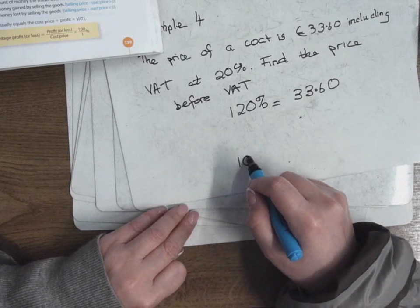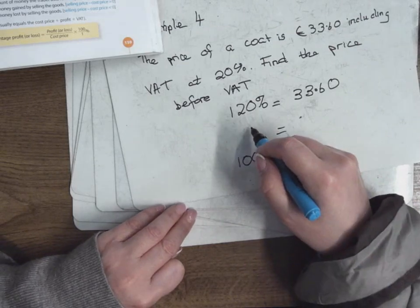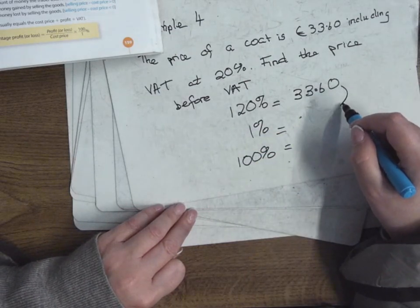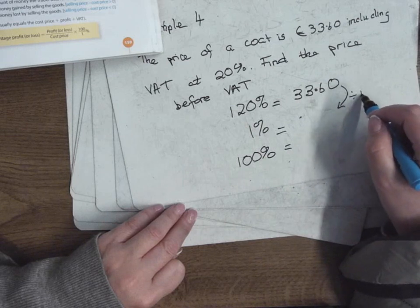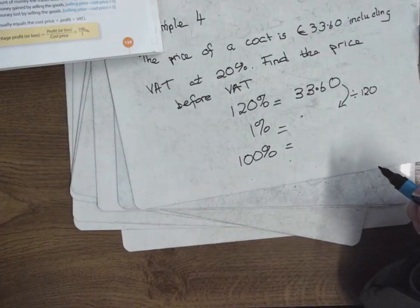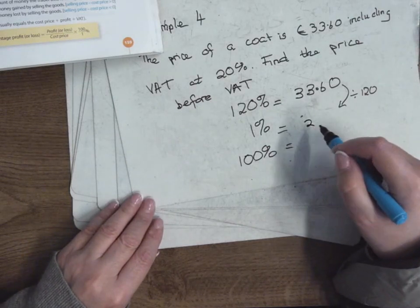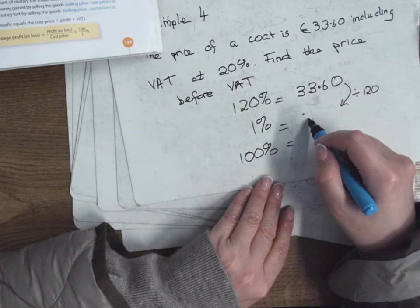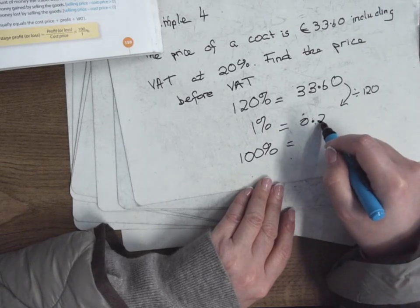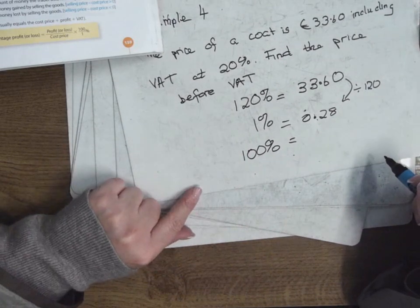What percentage would the price before VAT be if the price with VAT is 120%? What was the price before VAT? 100%. What do I go down to in the middle? Always go down to 1%. So how will I go from 120 down to 1? Divide by 120. So you always divide by this number. So into the calculator someone might do it, €3360 divided by 120.